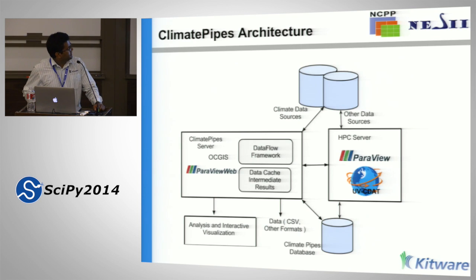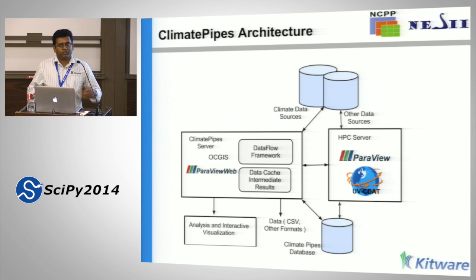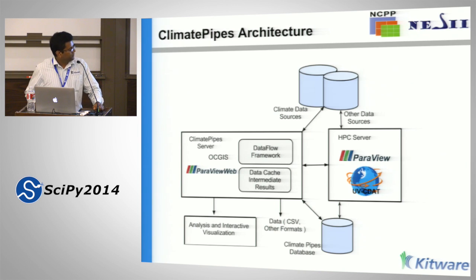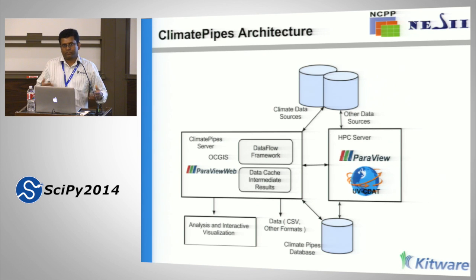Here's the big overview of the Climate Pipes architecture. It involves different toolkits, but they are all open source—not binding by any means. The idea is that you have a web server taking a request and then performing operations on HPC or your local workstation and producing some output. We construct workflows based on Vistrails, developed at NYU, who are partners in the Climate Pipes project. The workflows get executed on the server side and the results are brought back to the web browser for visualization.